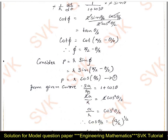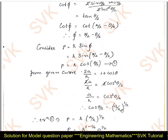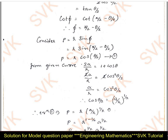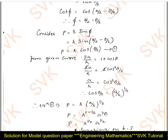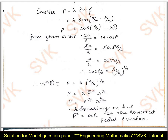From the given curve 2a/r = 1 + cos θ, using 1 + cos θ = 2·cos²(θ/2), we get a/r = cos²(θ/2), so cos(θ/2) = √(a/r). Substituting this into p = r·cos(θ/2), we get p = r·(a/r)^(1/2) = r^(1/2)·a^(1/2). Squaring both sides, p² = ar is the required pedal equation.